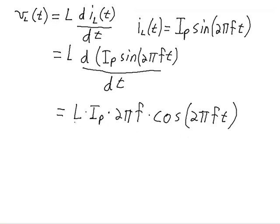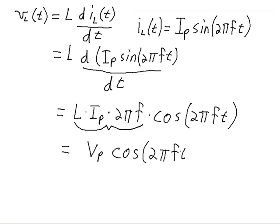So here's what VL of t is — the voltage. If we recognize the form of the equation and combine all of this together, that is our peak voltage. You can see that the peak voltage depends on the inductance of the inductor, it depends on how much peak current is going through the inductor, and it depends on the frequency that that current is changing.